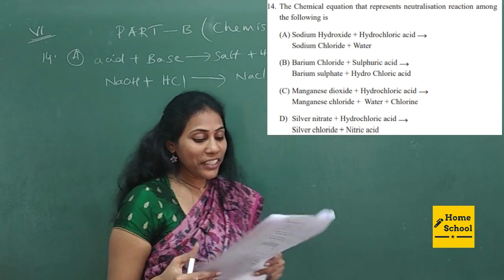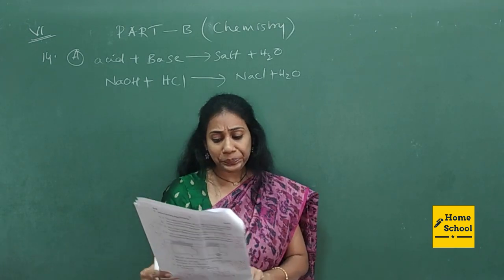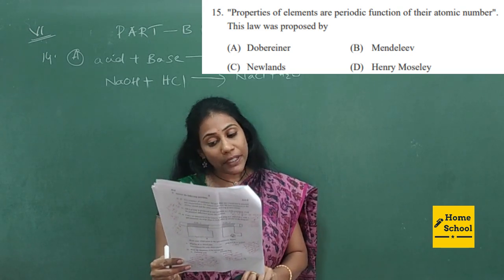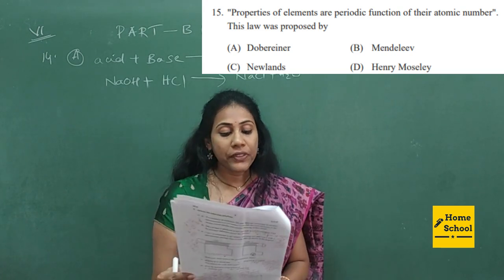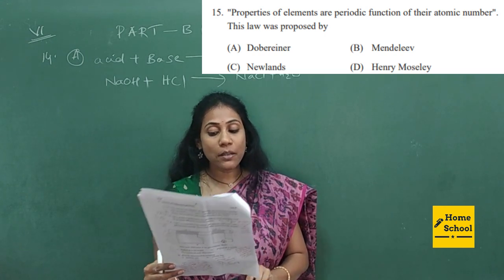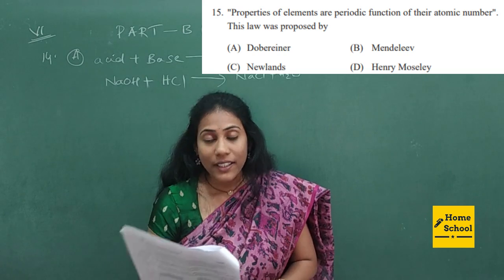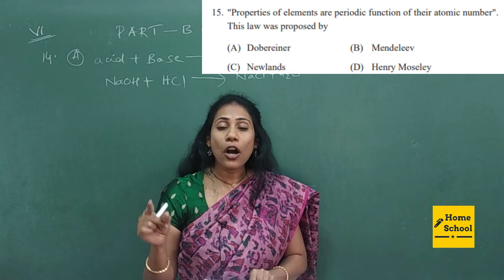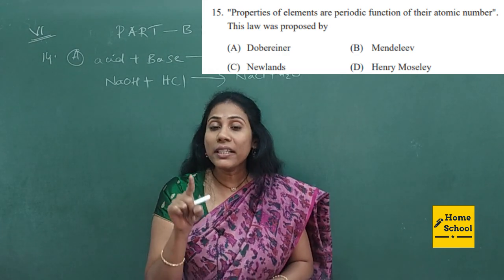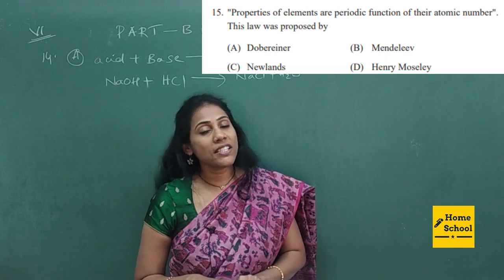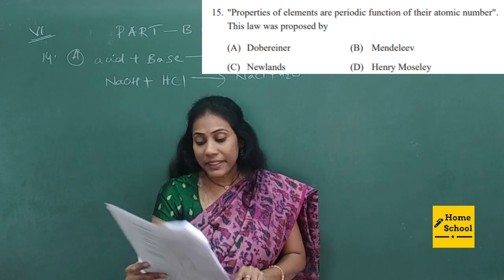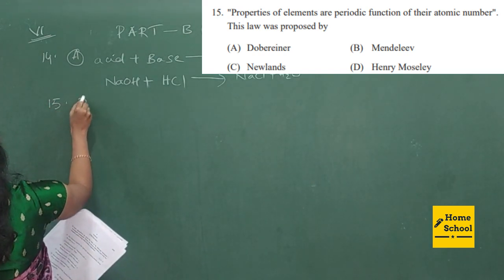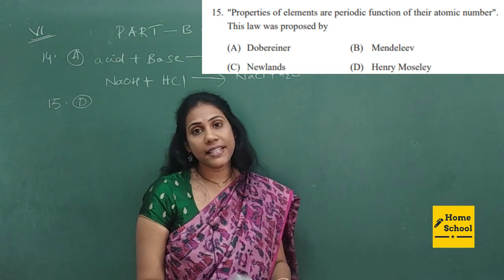Question 15 is based on a definition from periodic classification of elements: 'Properties of elements are periodic functions of their atomic number.' This is the modern periodic law. Modern periodic law was introduced by Henry Moseley. So the correct option is option D — Henry Moseley is the correct answer for question 15.